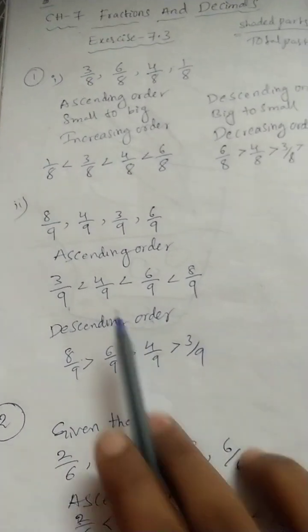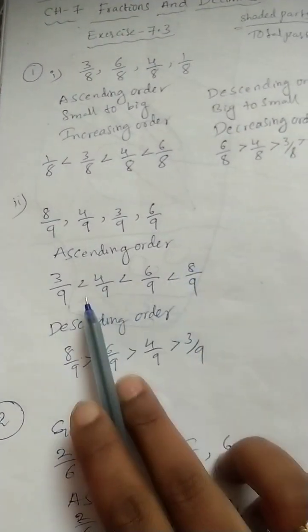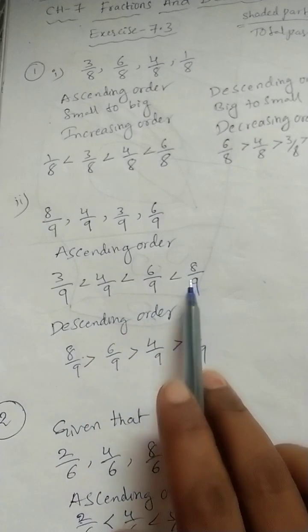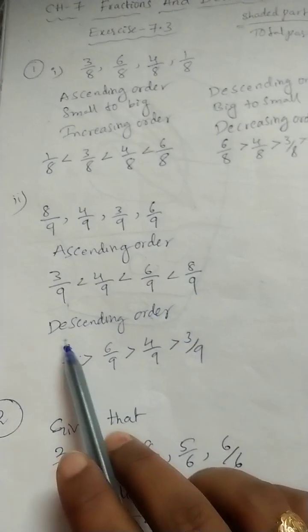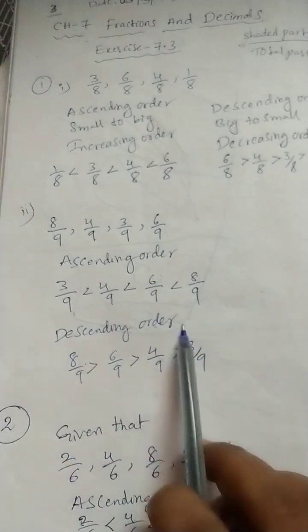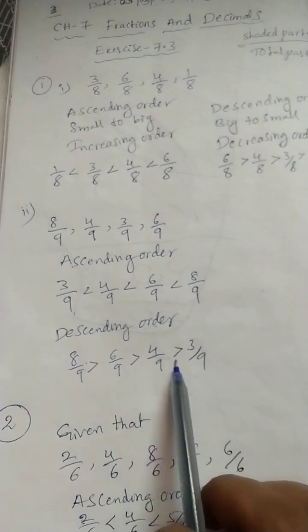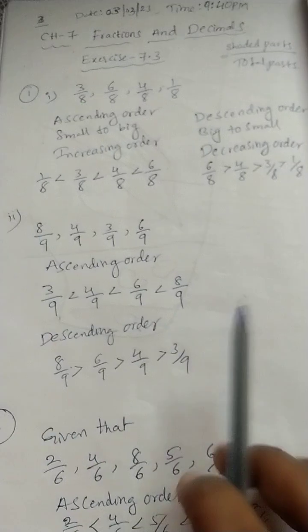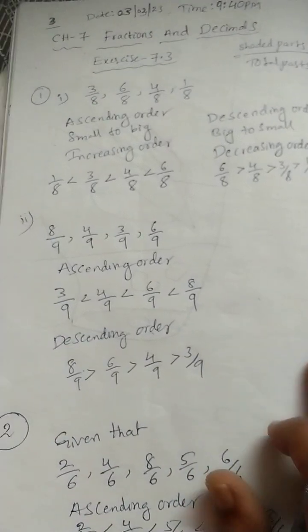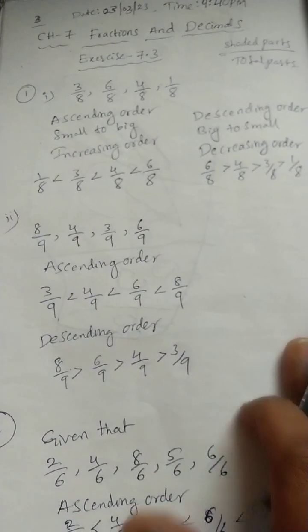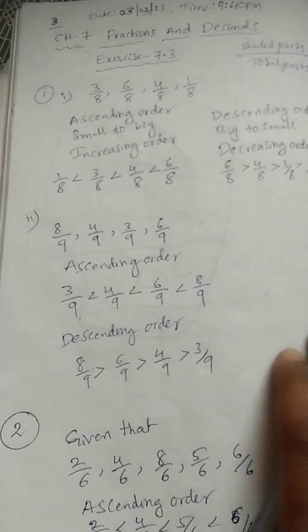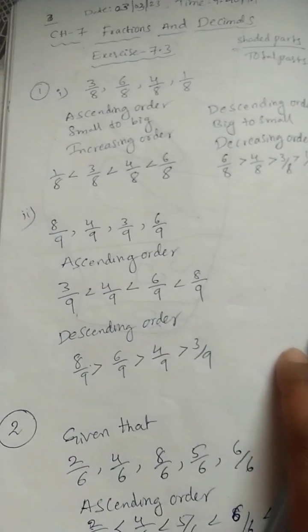When you are writing ascending order, we should write the less than symbol. When you are writing descending order, we should write the greater than symbol. Like this, we can write the solution for the first question.